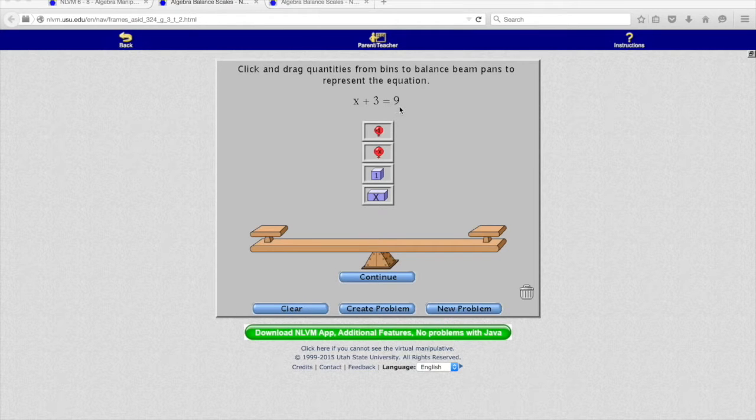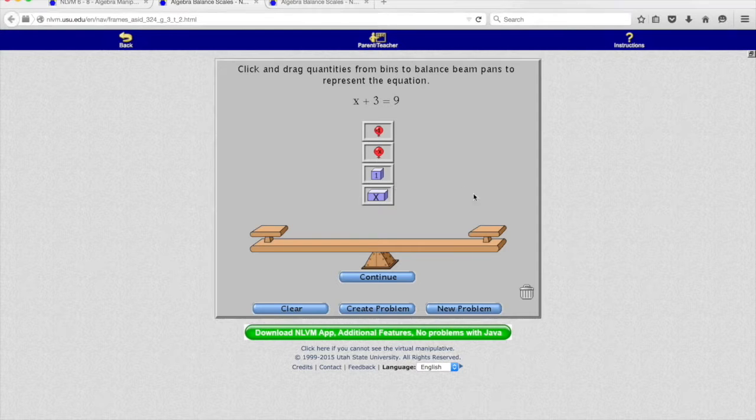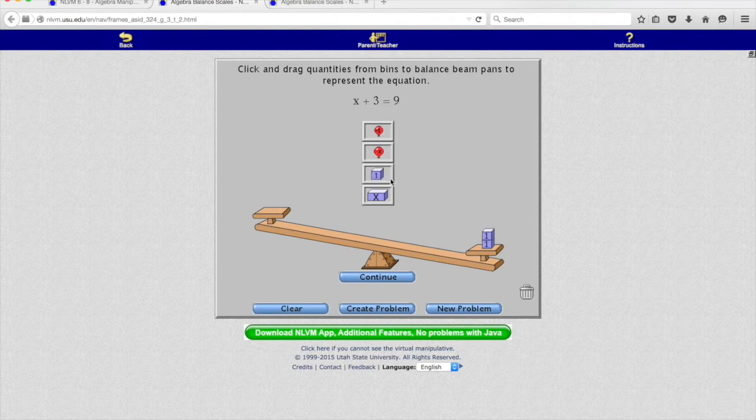In this case, let's start with the right side. The equal sign is our middle, so 9 means we're going to put 9 weights on the right hand side of this balance scale. Just as you'd expect, our balance scale tilts to the right because there's nothing on the left side yet.